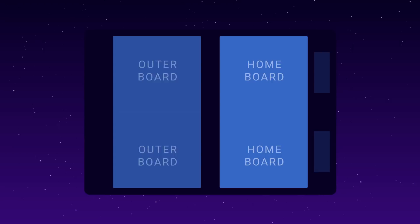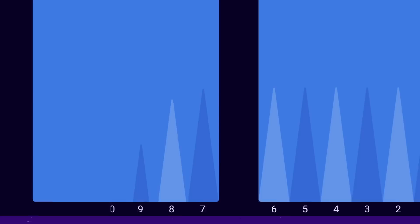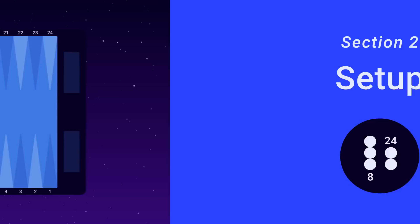The board is divided into four quadrants, two outer boards and two home boards. Each quadrant is divided into six points, making a total of 24 points. The vertical divider is called the bar, and the bear off trays are located on the side of the board.